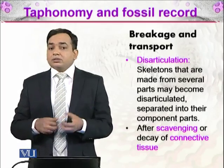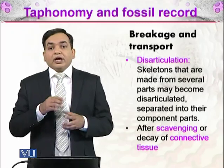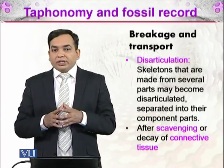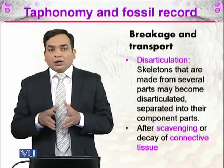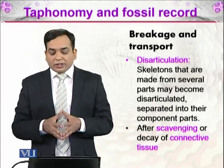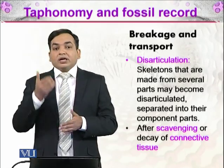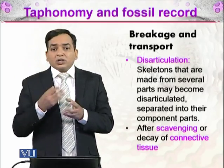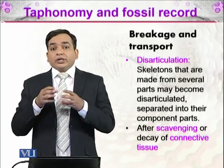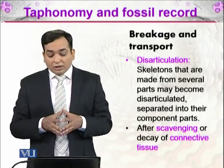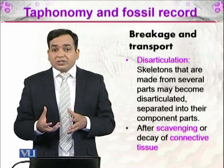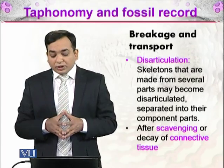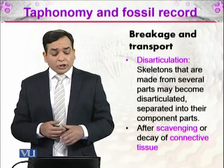Disarticulation might result after scavenging or decay of the connective tissue. One cause is that some animal fed on it and during feeding dispersed the bones. The second cause is that the joints joining the bones — muscles or tendons — if those decay due to bacterial action, this may also result in disarticulation.